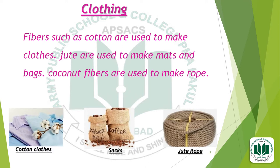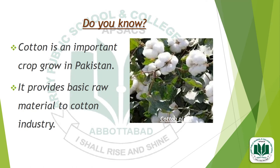Clothing. Some plants give us fibers used for making clothes, bags, and ropes. We get cotton from the cotton plant, and cotton is used to make clothes. Jute is used to make mats and bags. Coconut fibers are used to make rope. Here you can see the pictures of some things that we get from plants. Cotton is an important crop growing in Pakistan and it provides basic raw material to the cotton industry.